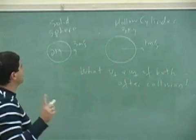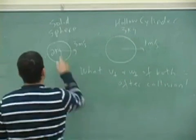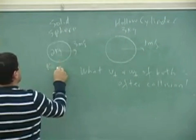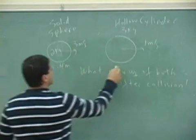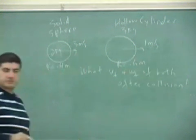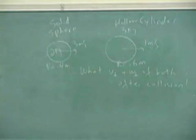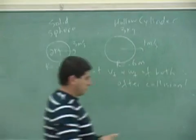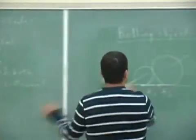And omega final of both after collision. I need to give you the radius too, right? The radius of this one, let's say, is 0.4 meters. The radius of this one is 0.6 meters.